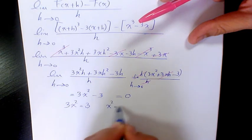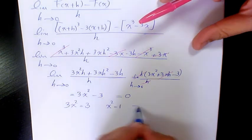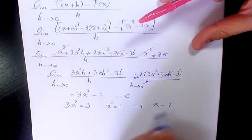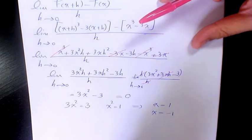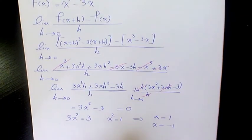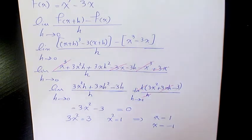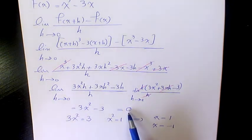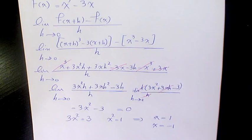This equals zero, so we have two answers: when x equals 1 and when x equals -1. At these two points the tangent line is going to be horizontal, which makes the slope equal to 0. That's how you find it. I hope you enjoyed this video — please leave me a comment if you have any questions and I'll get back to you as soon as possible. Thank you for watching.